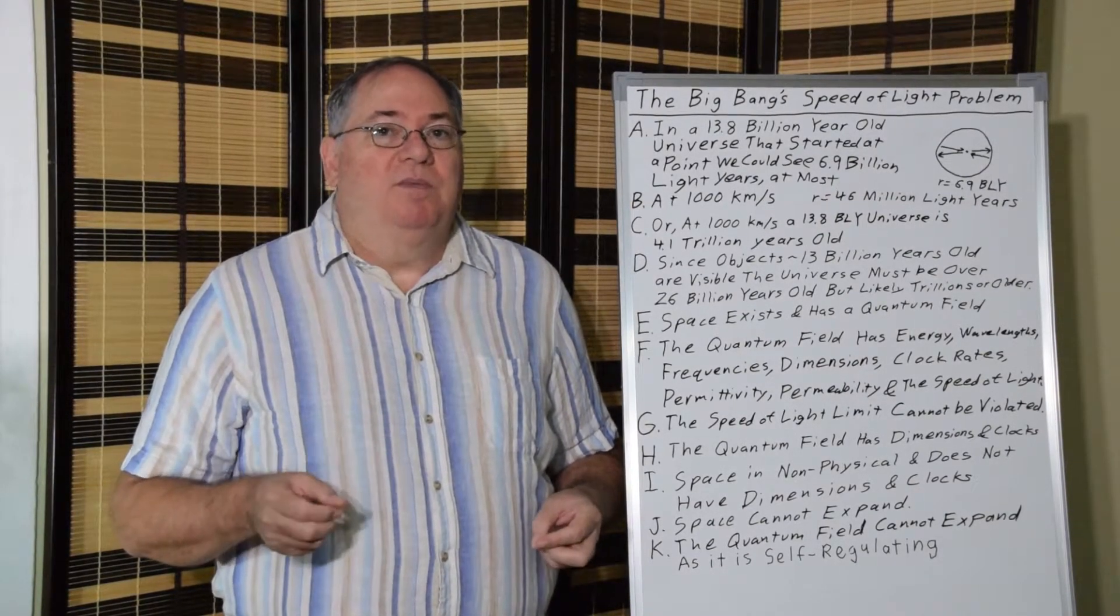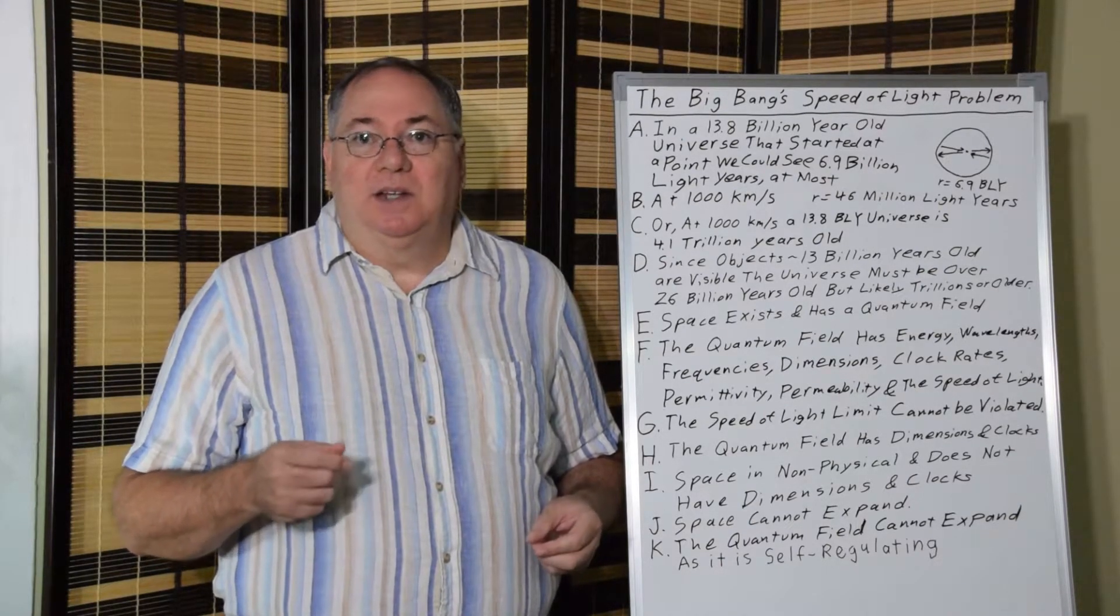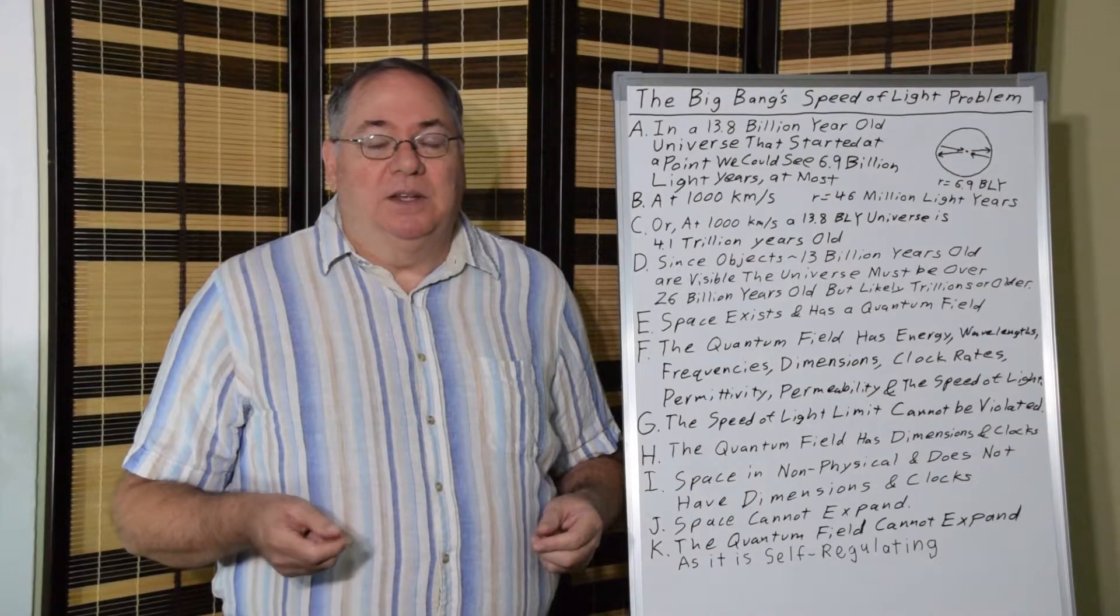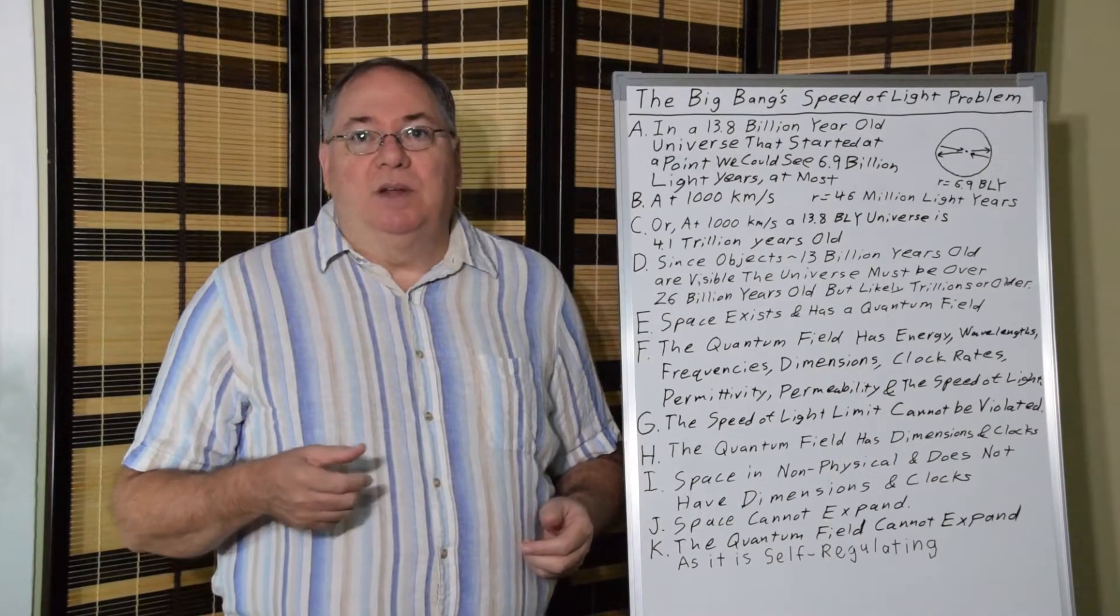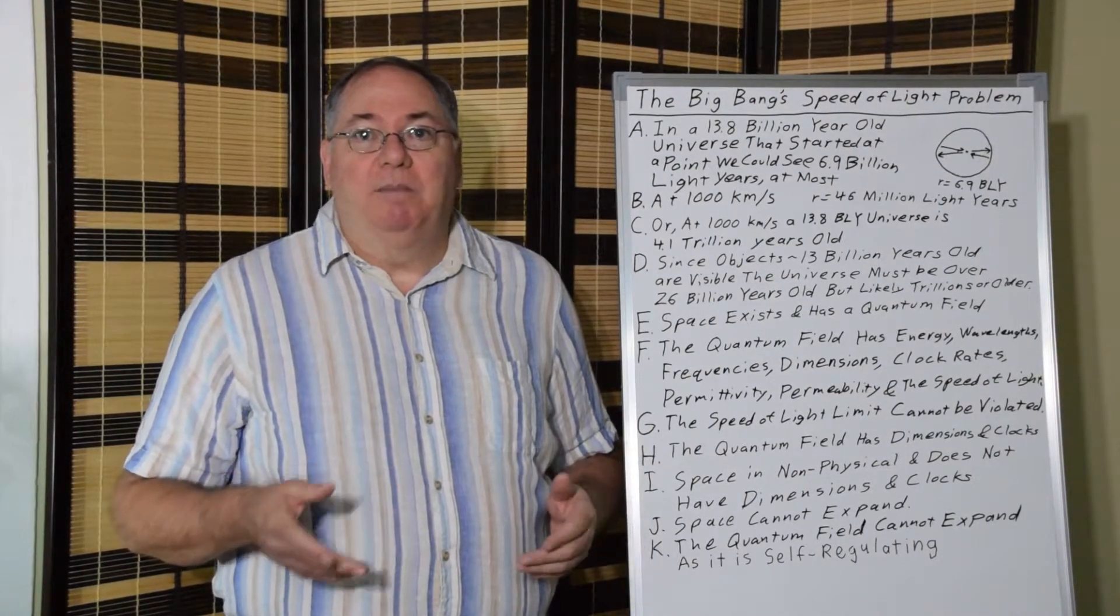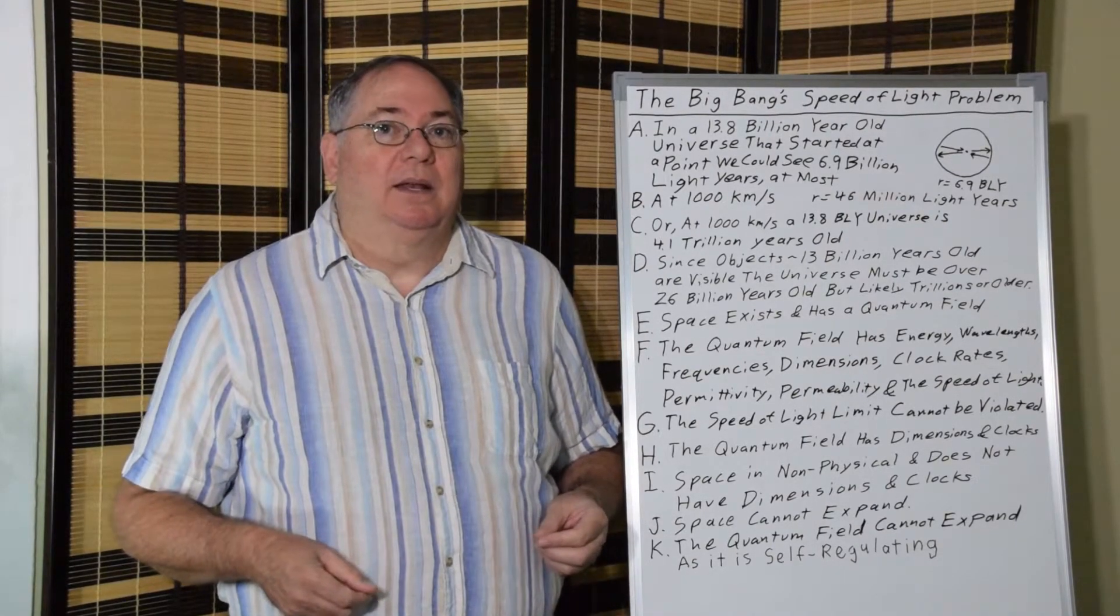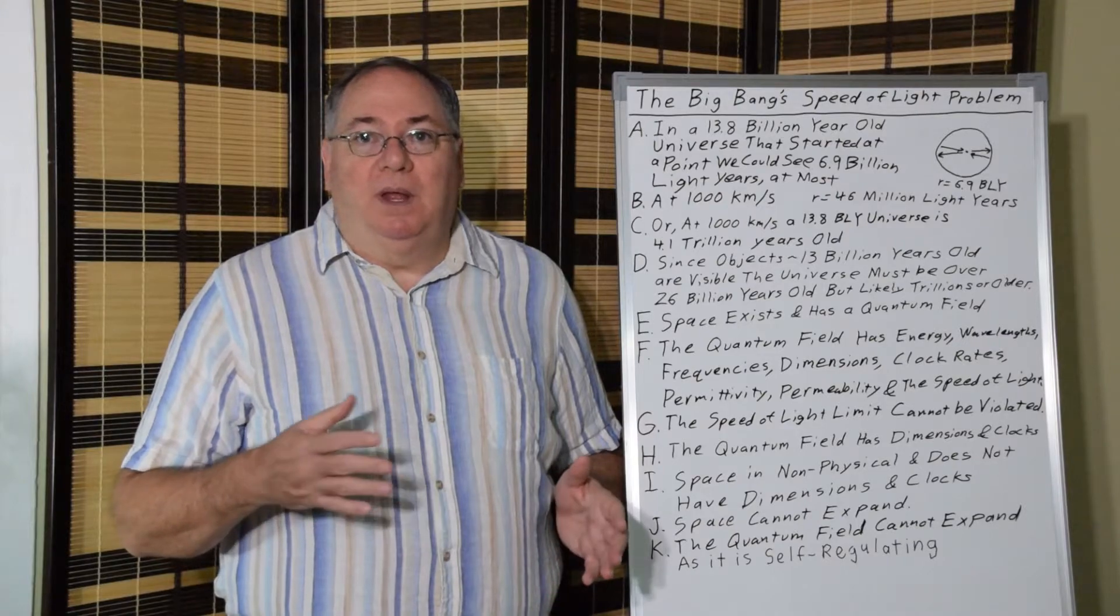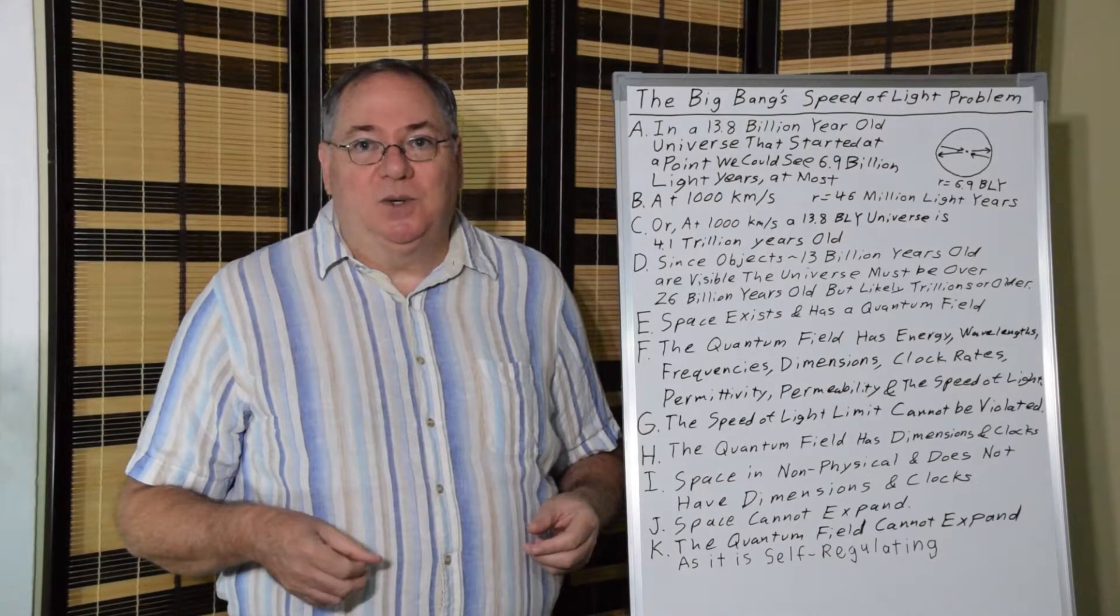So, the quantum field has physical dimensions and has clock rates associated with the frequencies. The quantum field also has permittivity and permeability, which are the electric and magnetic constant that determine how fast electric fields and magnetic fields propagate.